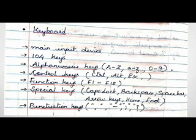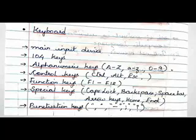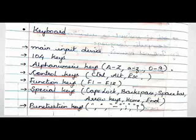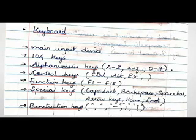Next one is special keys. These keys include Caps Lock, Backspace, Space Bar, arrow keys, and Home and End keys. Next one is about punctuation keys. These are used for adding punctuations like comma, hyphen, semicolon, and question mark.